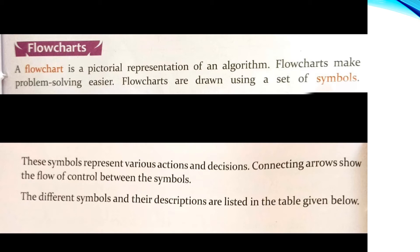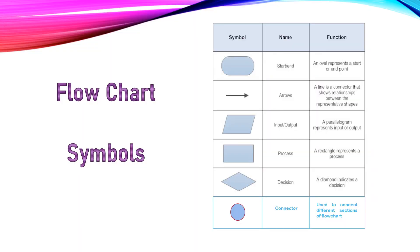Arrows show the flow of control between symbols. Is mein arrows hote hain jo humein flow of control batate hain — pehle kya symbol hua, us ke baad kya ho raha hai, us ke baad kya aata hai. Different symbols aur unki description listed hain table mein. Kon action woh lete hain woh hum is table mein is ke baad dein ge.